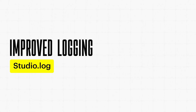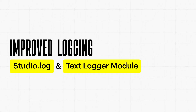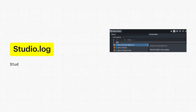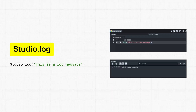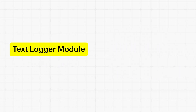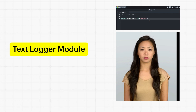The addition of Studio.log and the Text Logger module will help make debugging lenses quicker and easier. With Studio.log, paired devices will automatically log messages to the Lens Studio Logger panel, making debugging lenses on paired devices easier than ever before. For instance, this code would output "This is a log message" in the console both locally and from the Lens running on your paired device. The Text Logger module takes logging a step further. It's a helper module that you can add to your script to log text right into your Lens scene in real-time.